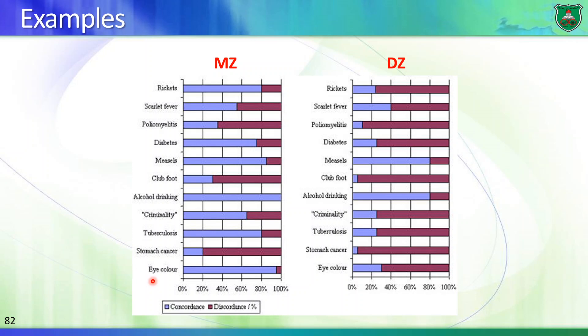Looking at eye color: there is a 90% concordance in monozygotic twins — if one has blue eyes, the other would also have blue eyes — because they share the same genes. In dizygotic twins the concordance is lower, because they share only 50% of their genes.